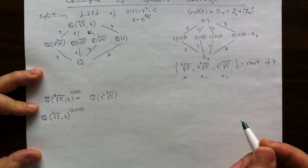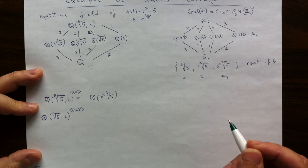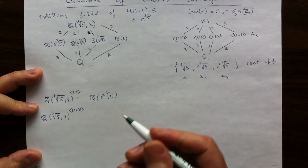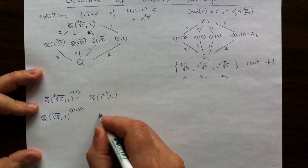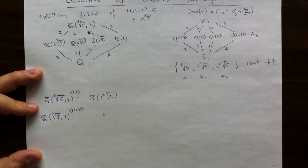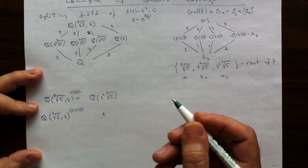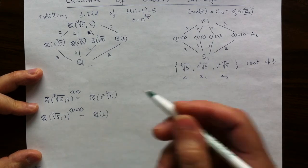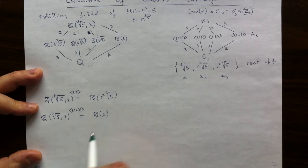But if you don't find it satisfactory, this explanation, we could do the honest computation. We could see that again, epsilon is inside this subfield of invariants and hence it will have to generate the whole field because the degree still is the same as the degree which you get by attaching just epsilon.